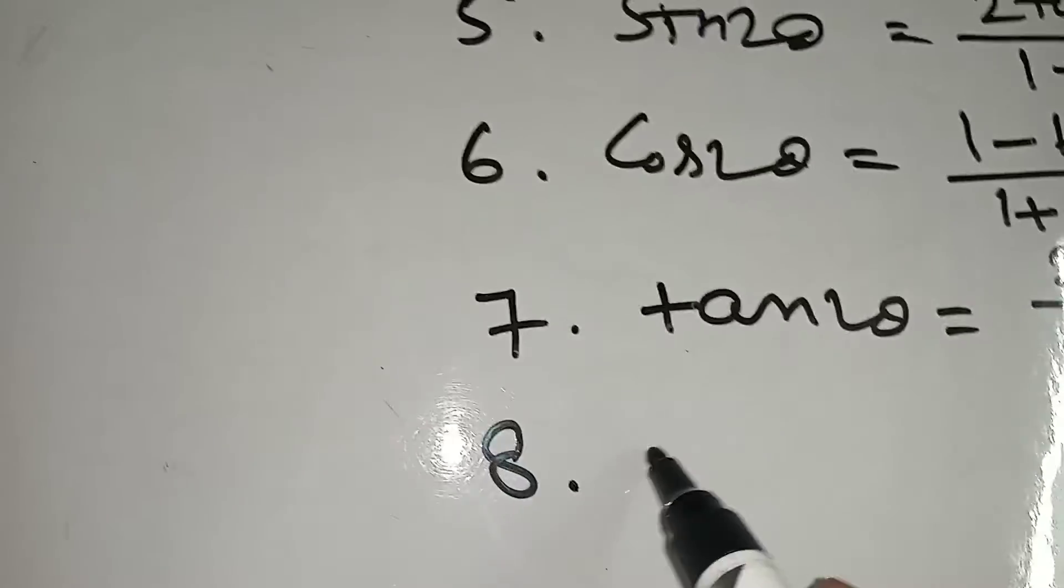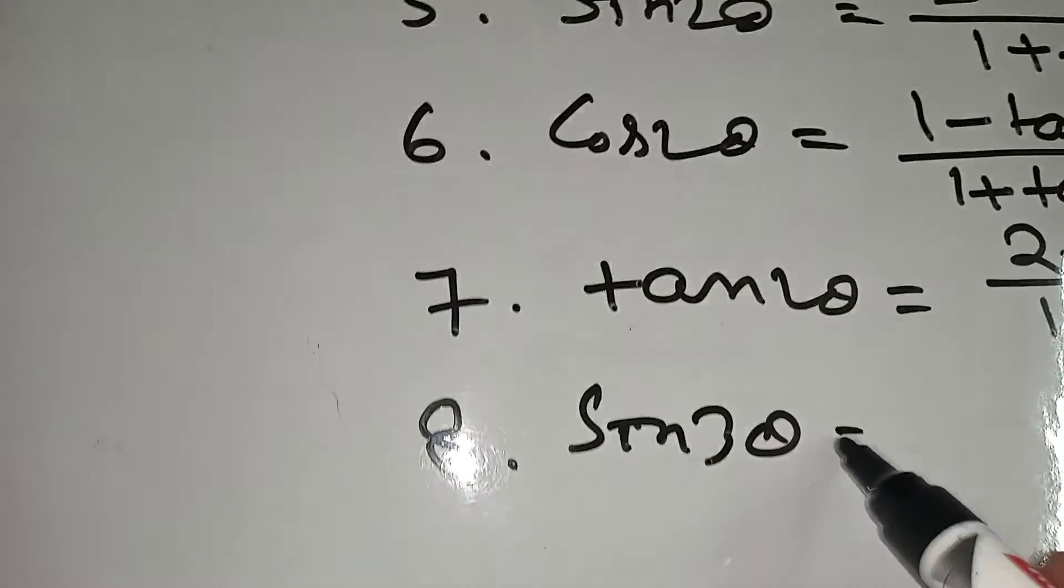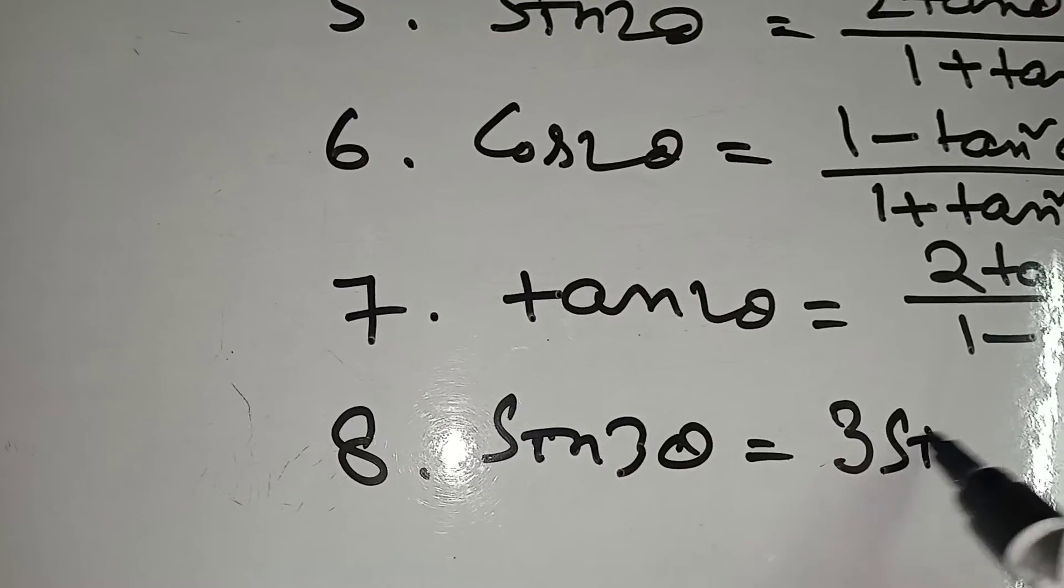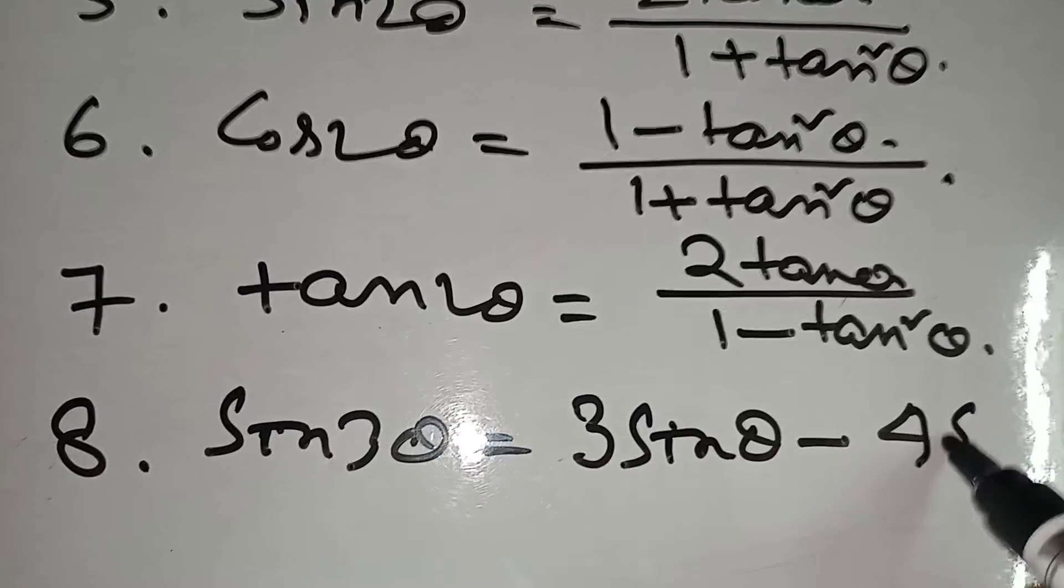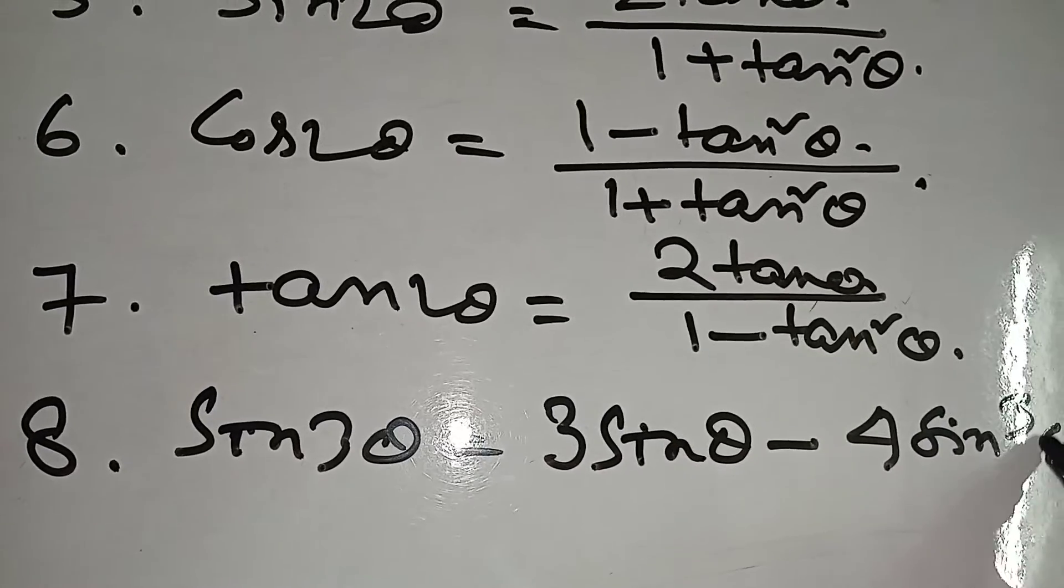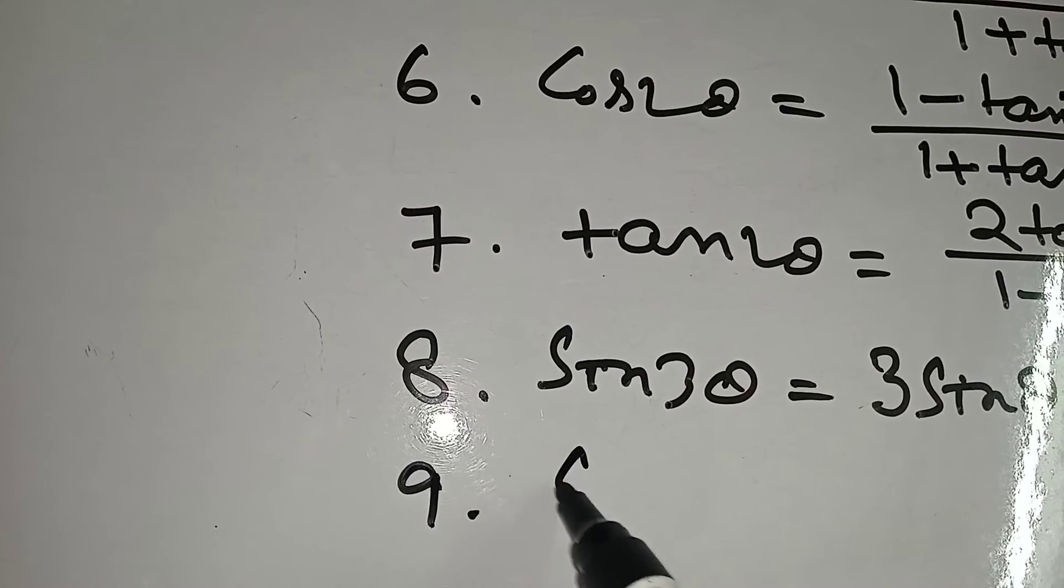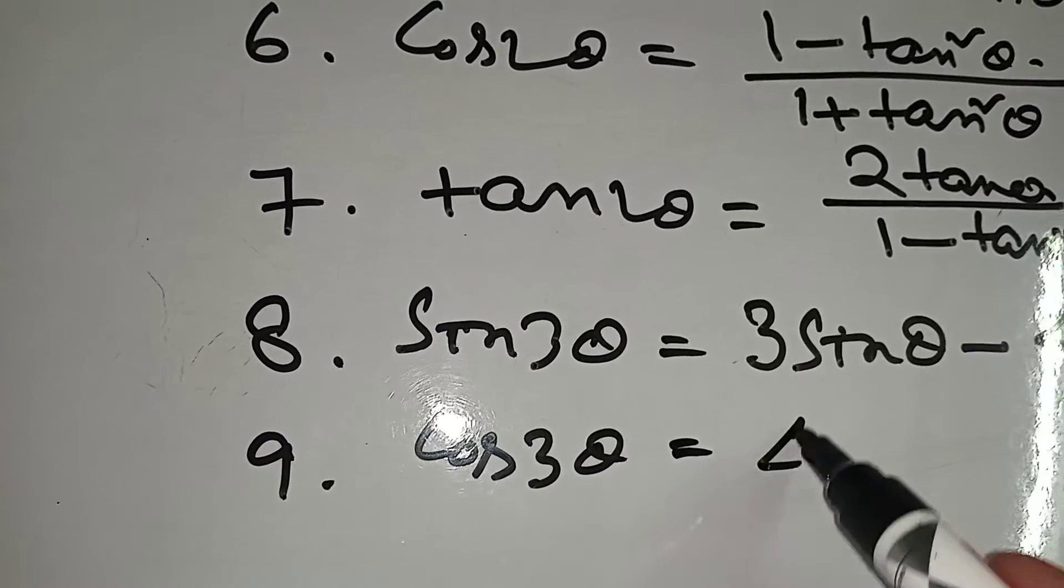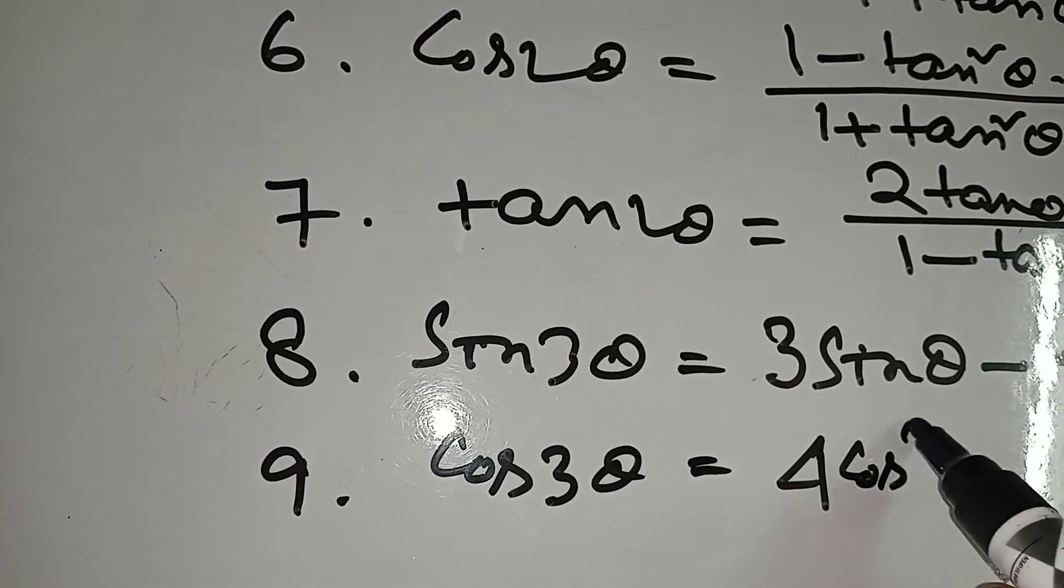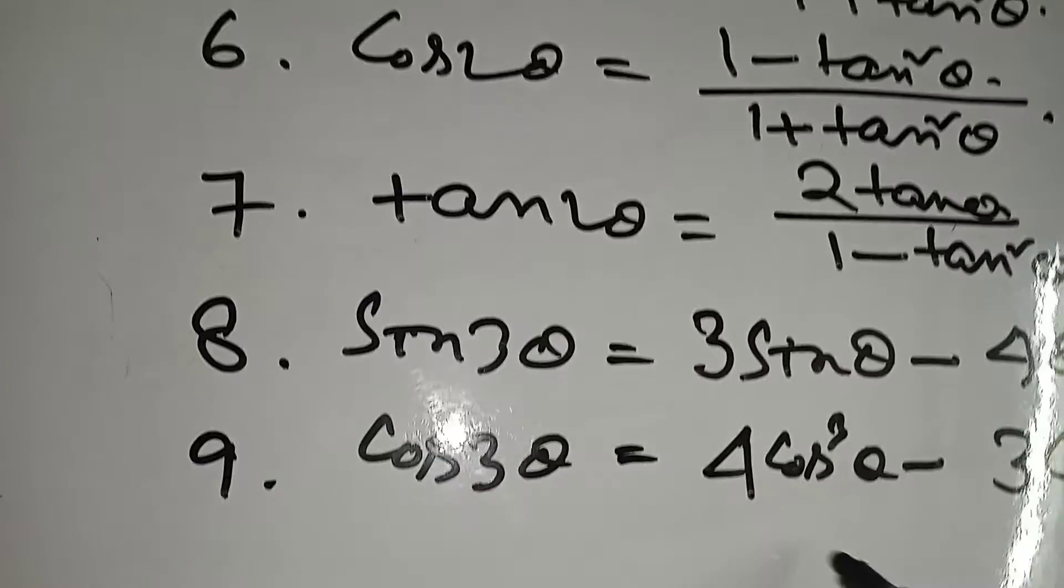Number 8: sin 3 theta equal to 3 sin theta minus 4 sin cube theta. Number 9: cos 3 theta equal to 4 cos cube theta minus 3 cos theta.